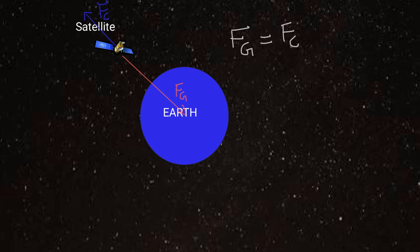Now, this can be written as GMm/r² = mv²/r where capital G is the gravitational constant, capital M is earth's mass, small m is the mass of the satellite, and r is the distance between these two bodies.